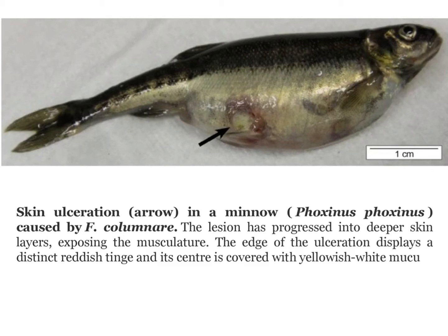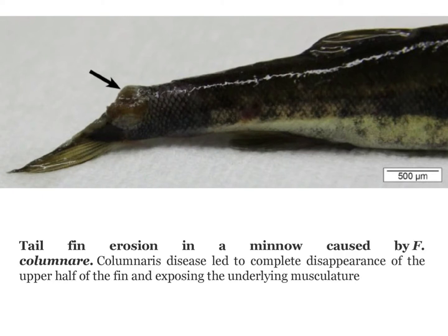In this image you can see skin ulceration, represented by arrow, also caused by Flavobacterium columnare. The lesion has progressed into deeper skin layers, exposing the musculature. The edge of the ulceration displays a distinct reddish tinge and its center is covered with yellowish-white mucus. Here is another lesion at the tail fin — tail fin erosion caused by Flavobacterium columnare — leading to complete disappearance of the upper half of the fin, exposing the underlying musculature.